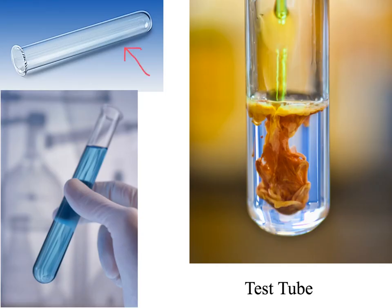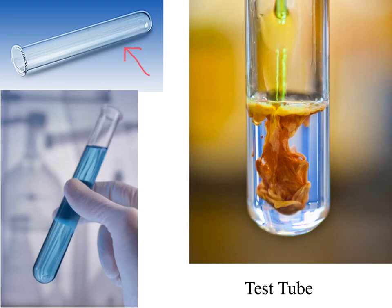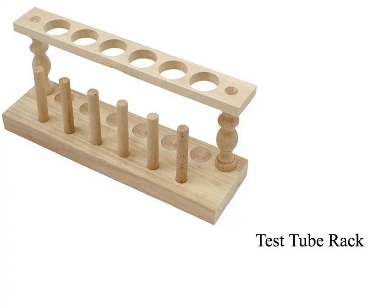This is a test tube and we'll be using them many times in the lab. Their function is very simple: to observe chemical reactions. We take a chemical, add something to it, and the test tube allows us to observe the interesting chemical reaction safely. This item is called a test tube rack, and its function is simply to hold the test tubes — the test tubes go right in, and it holds them.